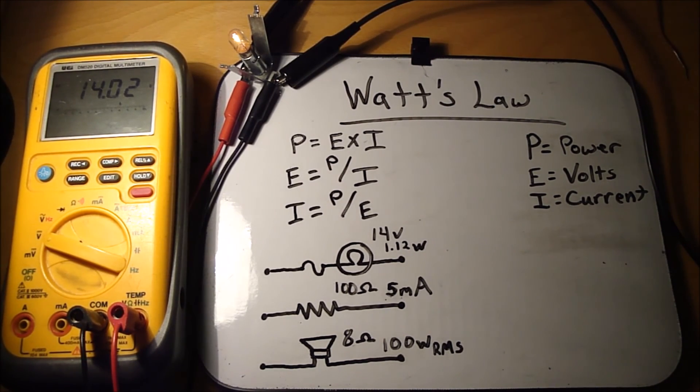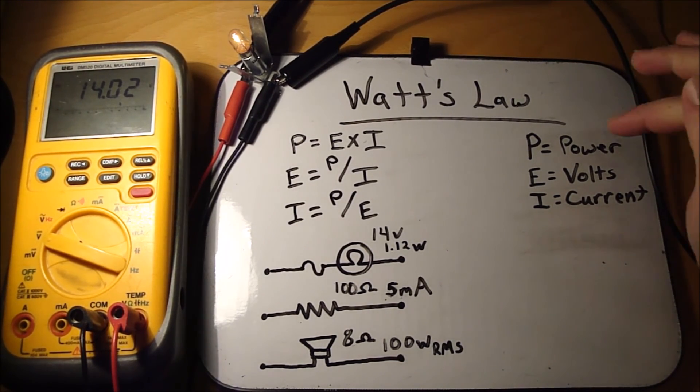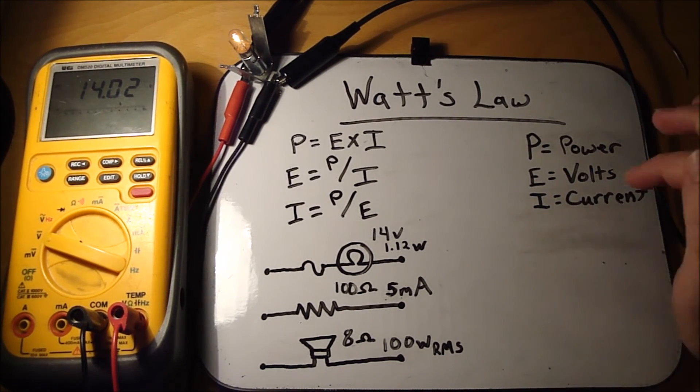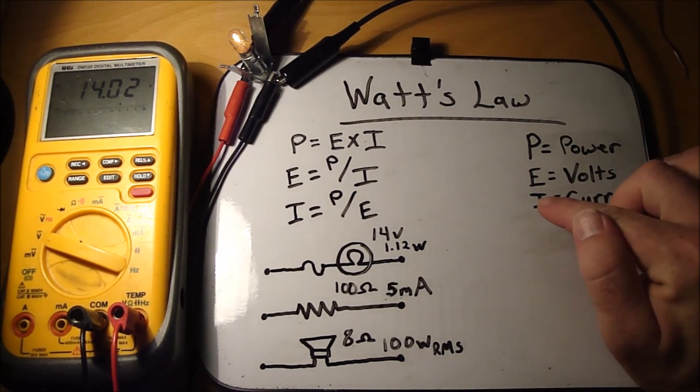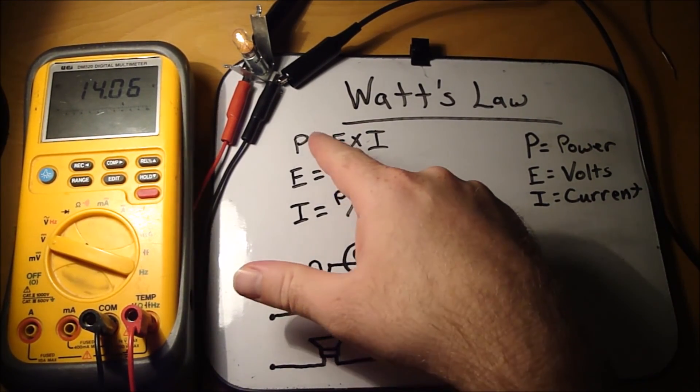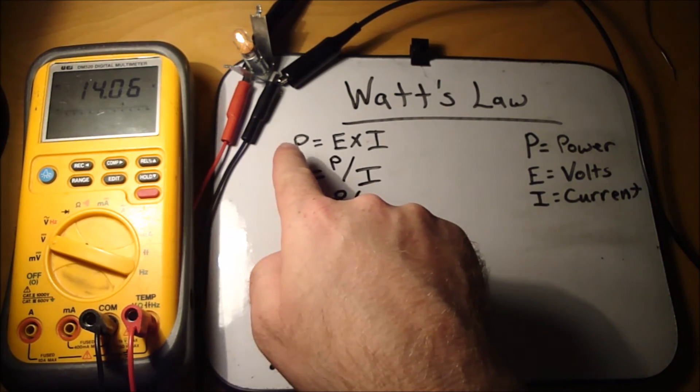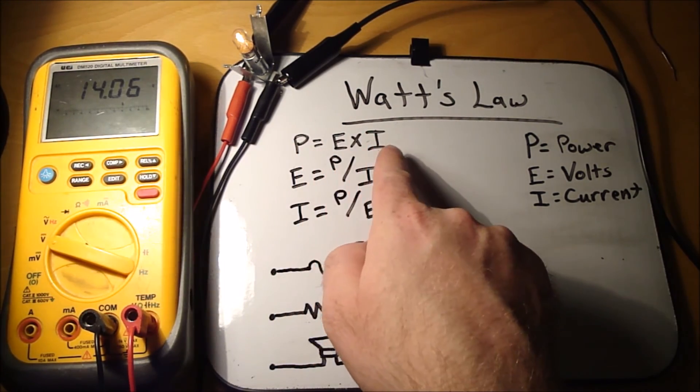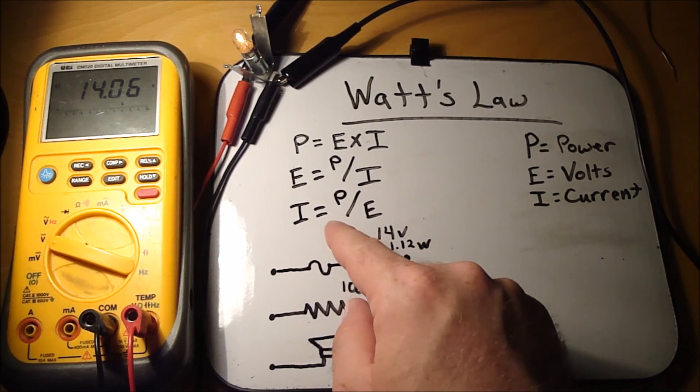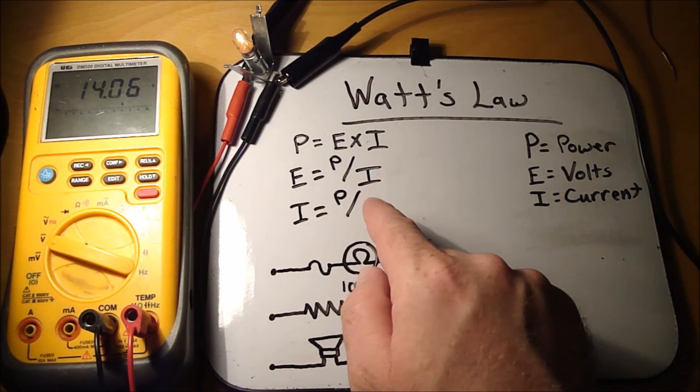So watts can be calculated in a circuit using Watt's Law. And P equals power, which is measured in watts. E equals volts. I equals current. So this is Watt's Law. Power equals volts times current. Volts equals power divided by current. And current equals power divided by volts.